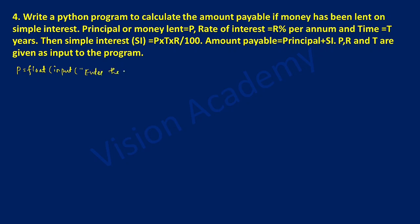Here I am going to write: enter the principal amount. End the double quotation mark and close the bracket. Now I am going to take T — again float type of data and input function — and in this we will ask the user to enter the time. Time duration is always in terms of years, so close the bracket.